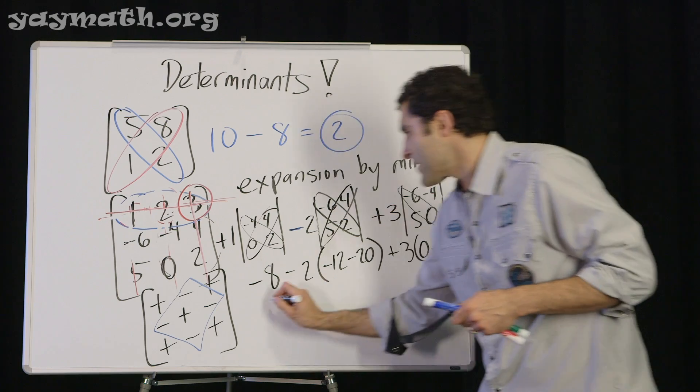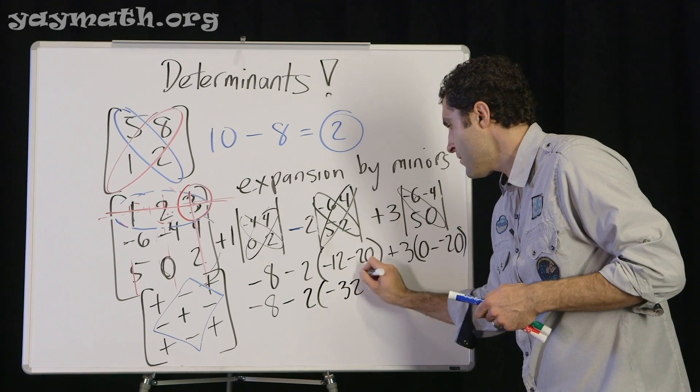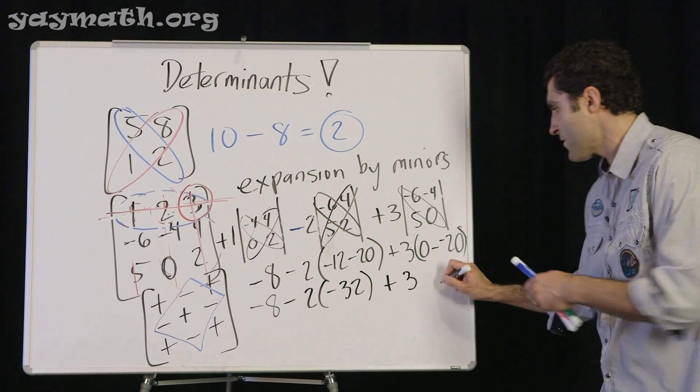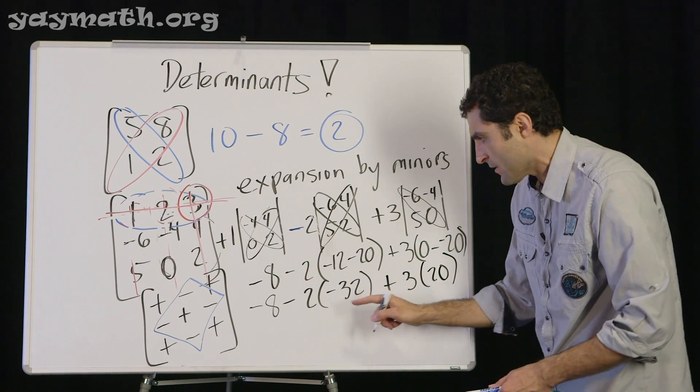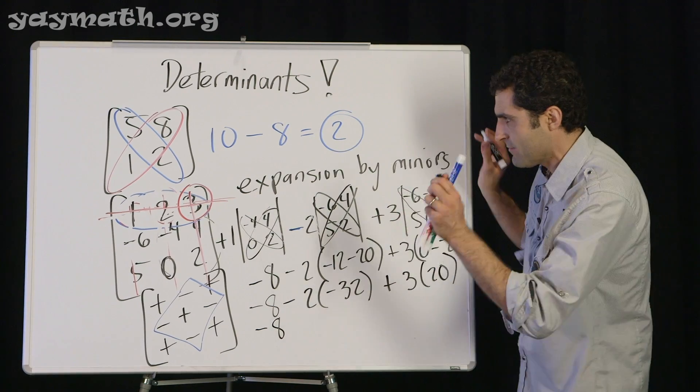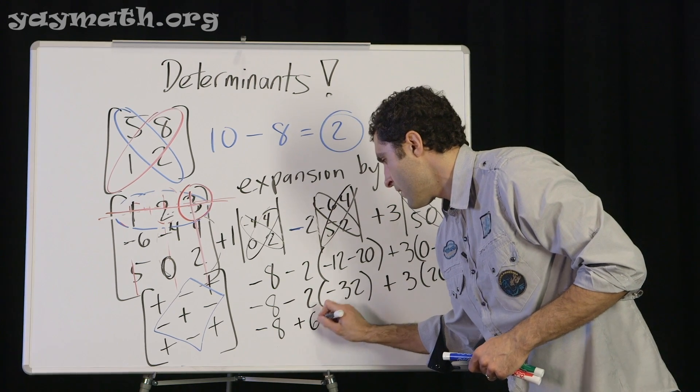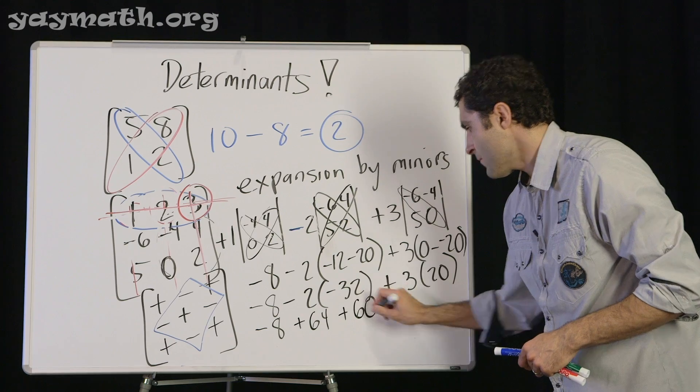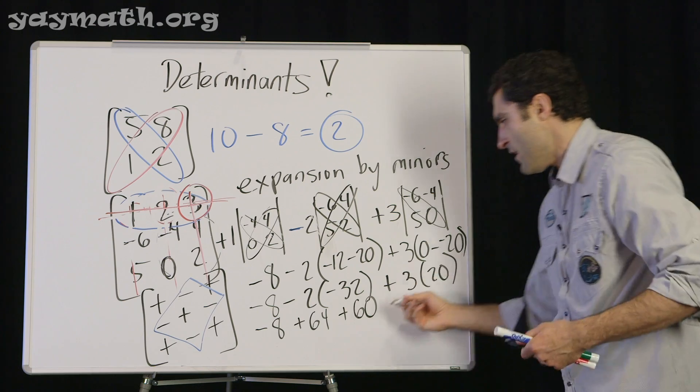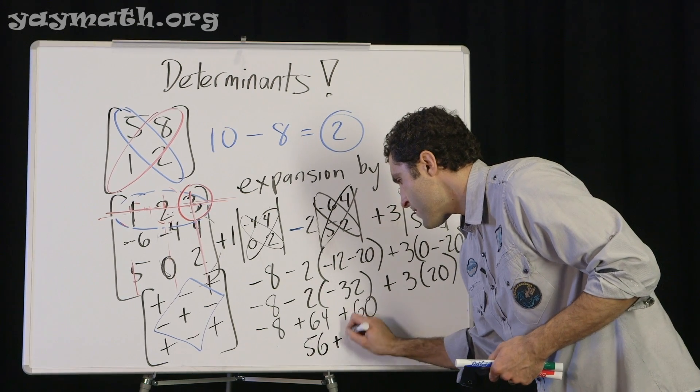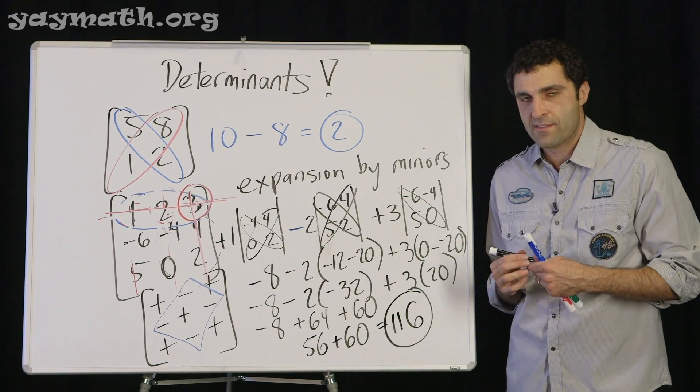Let's see what comes a-knockin'. Negative 8, and then negative 2 times this is negative 32. And this is plus 3 times 0 plus 20 is 20. Stay with it. Stay crackin'. Not literally. Stay poppin'. I mean, stay intact. This is negative 2 times negative 32 is positive 64. And then you have plus 60. So negative 8 and 64 makes 56 plus 60. 56 plus 60 is 116 is the determinant of this three by three matrix. That's method one. It's called expansion by minors.